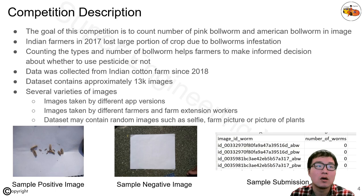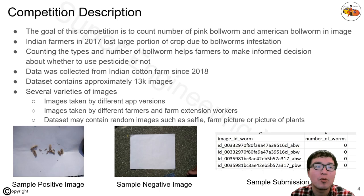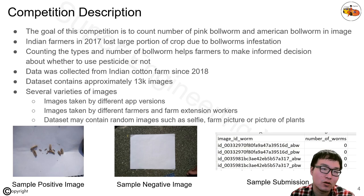Indian farmers in 2017 lost a large portion of crop due to bollworm infestation. Counting the types and numbers of bollworms helps the farmer make informed decisions about whether to use pesticides or not, and how to apply them. Data was collected from Indian cotton farms since 2018. This dataset contains approximately 13,000 images, so it's a real-world problem.